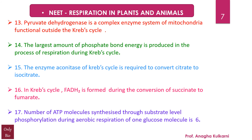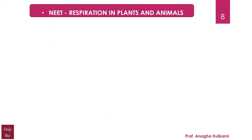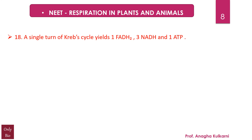Point number 17: The number of ATP molecules synthesized through substrate-level phosphorylation during aerobic respiration of one glucose molecule is 6. Point number 18: A single turn of the Krebs cycle yields 1 FADH2, 3 NADH, and 1 ATP.